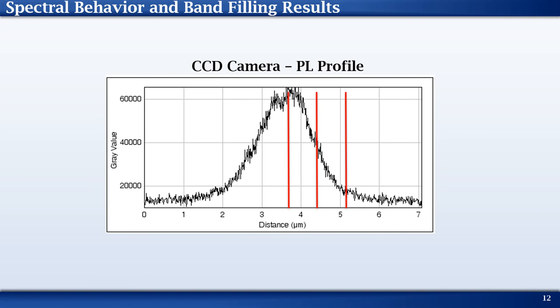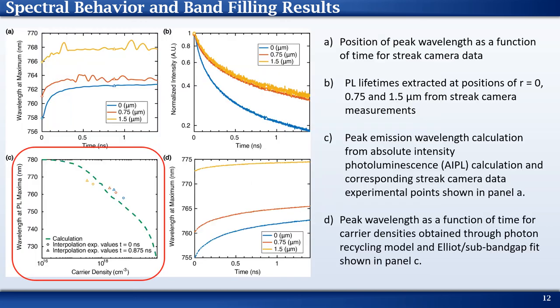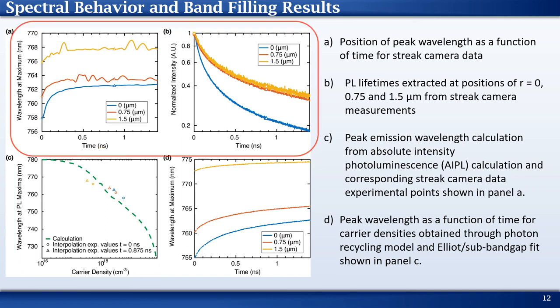To quantitatively explain this, we fit the absorption spectrum of our sample to an Elliott model and then model the PL as a function of quasi Fermi level splitting. The result of this model is shown in panel C, which illustrates the relationship between carrier density and peak wavelength as derived from the bandfilling calculation. We plot experimental values obtained from panels A and B for comparison.